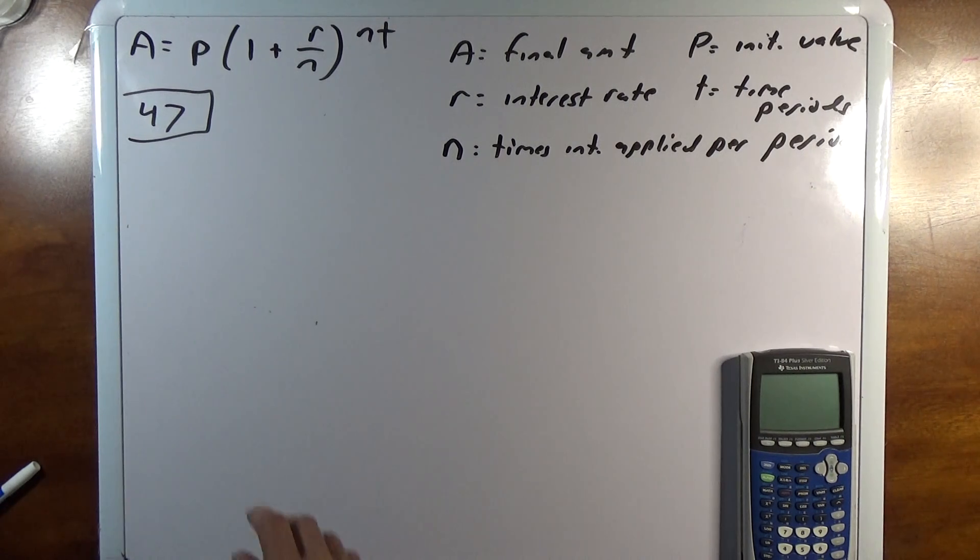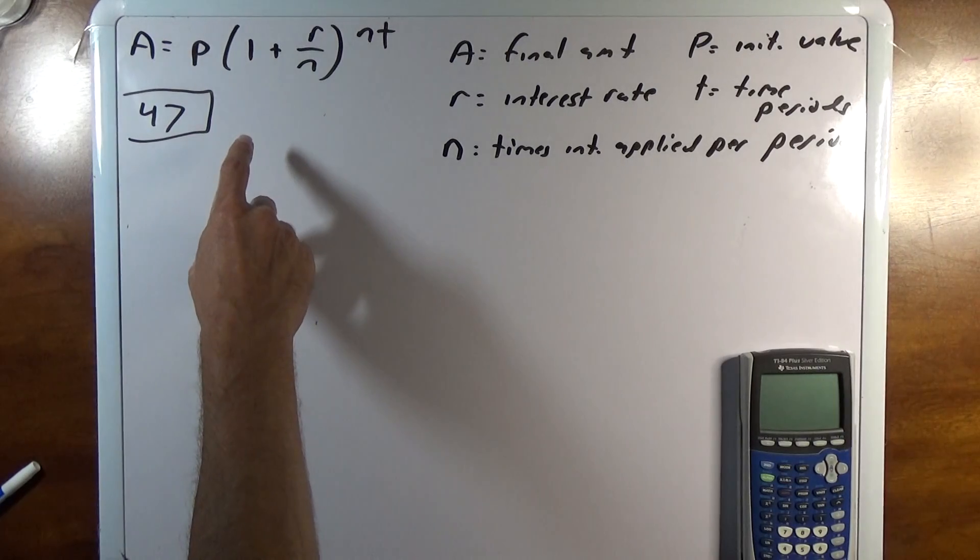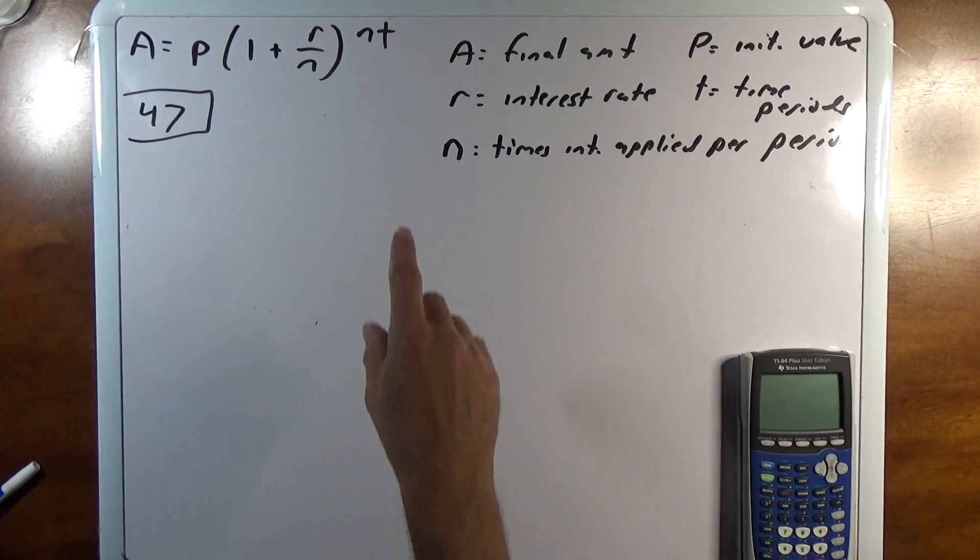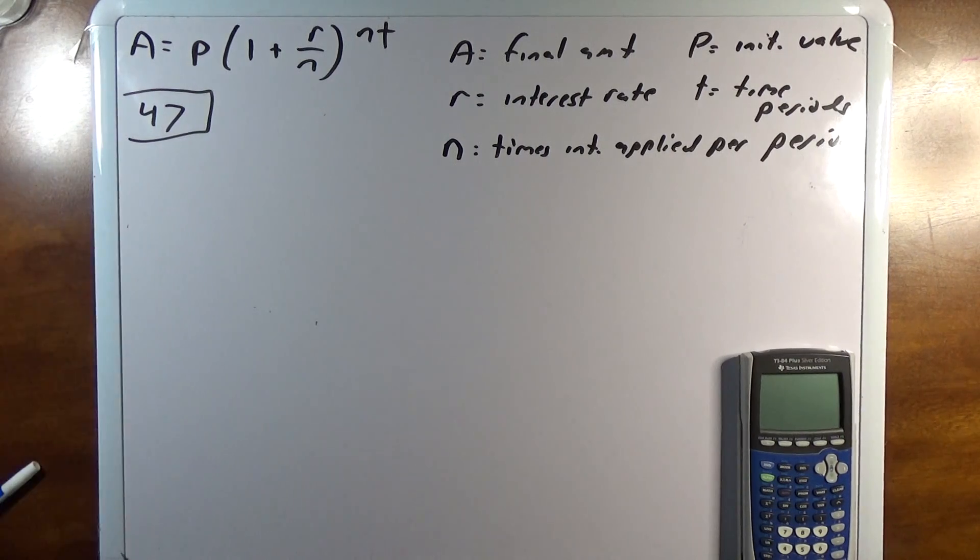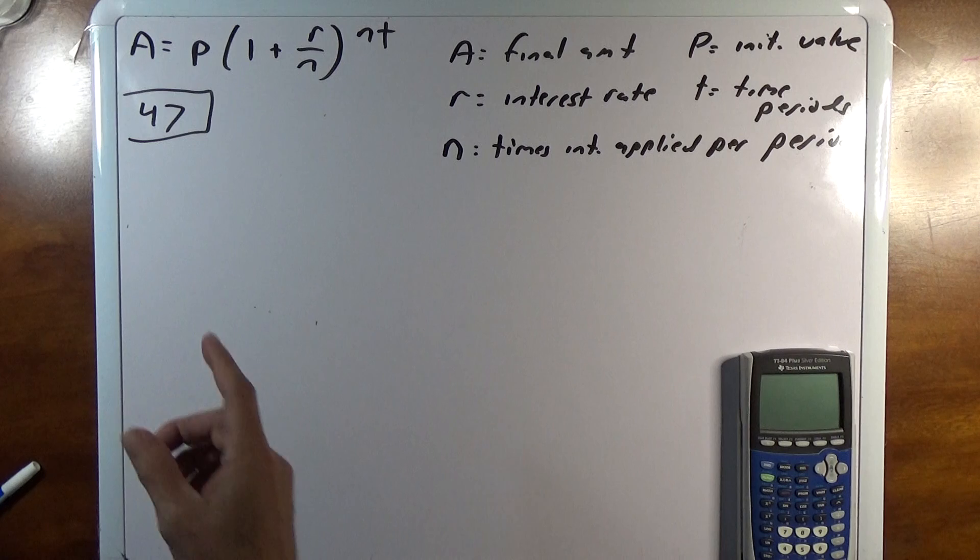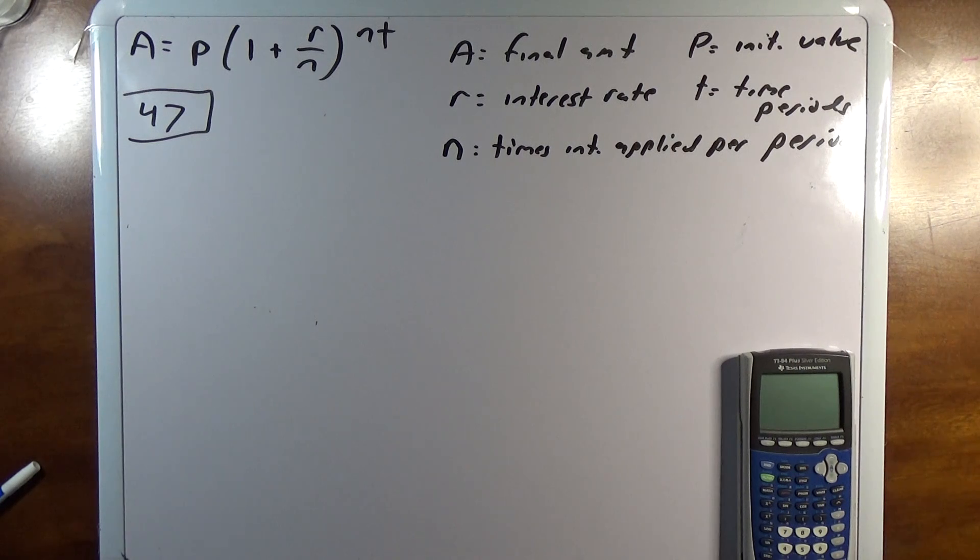So what I have here is compound interest formula. I've written out A is our final amount, the balance in the account at the end. P is the initial value, what the account starts with. R is the interest rate as a decimal. T is the time periods, usually years. And N is the number of times that it's compounded per period.